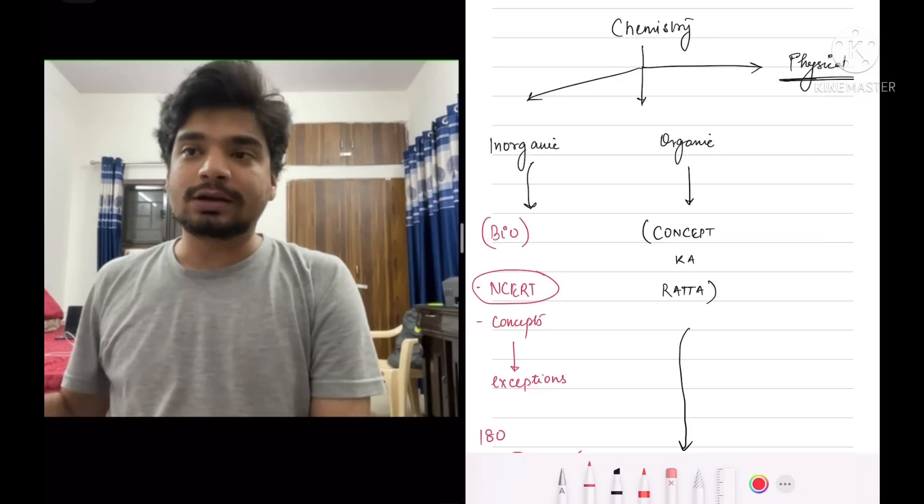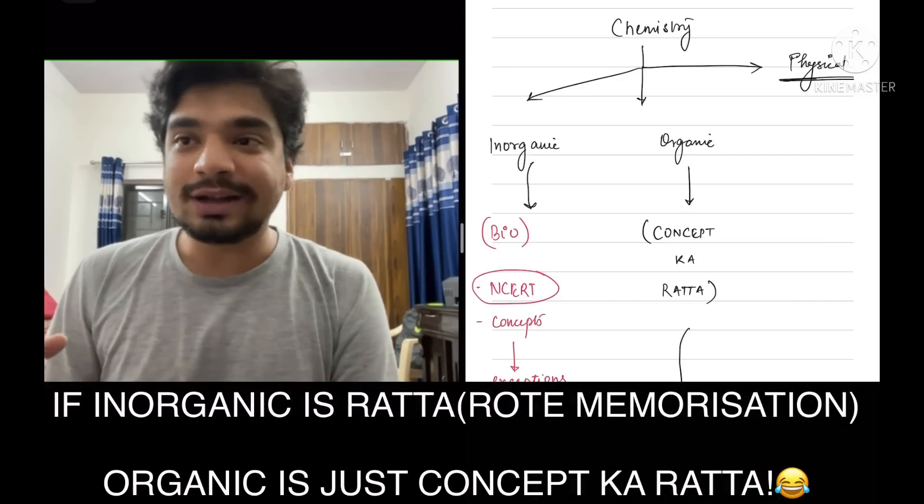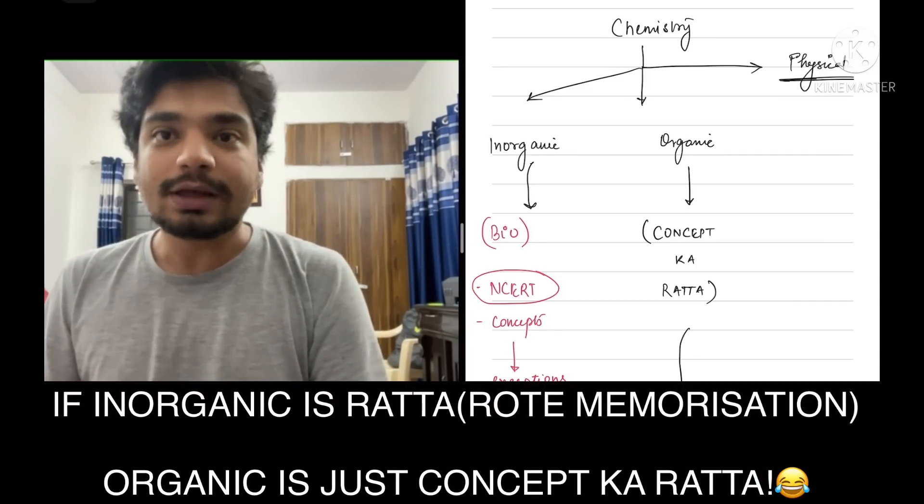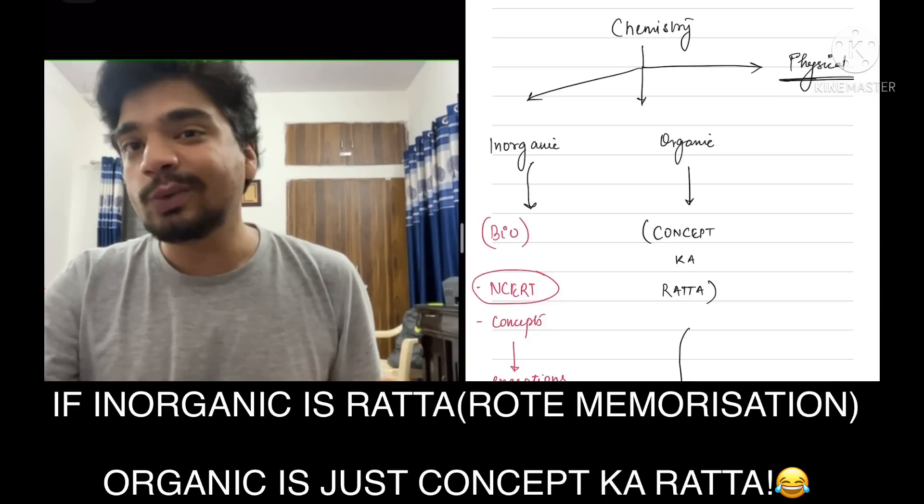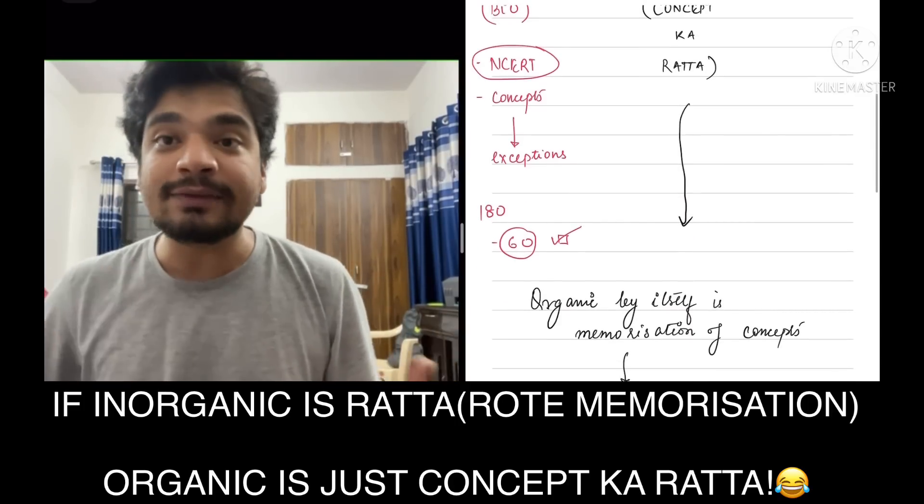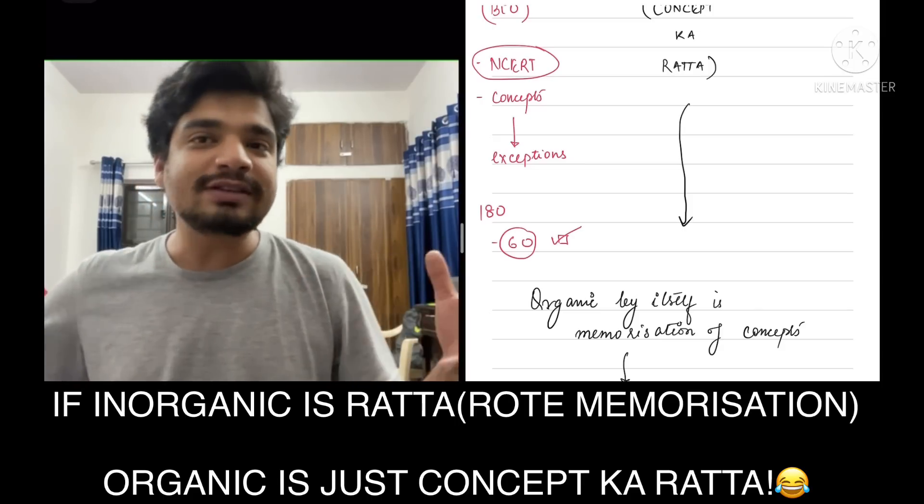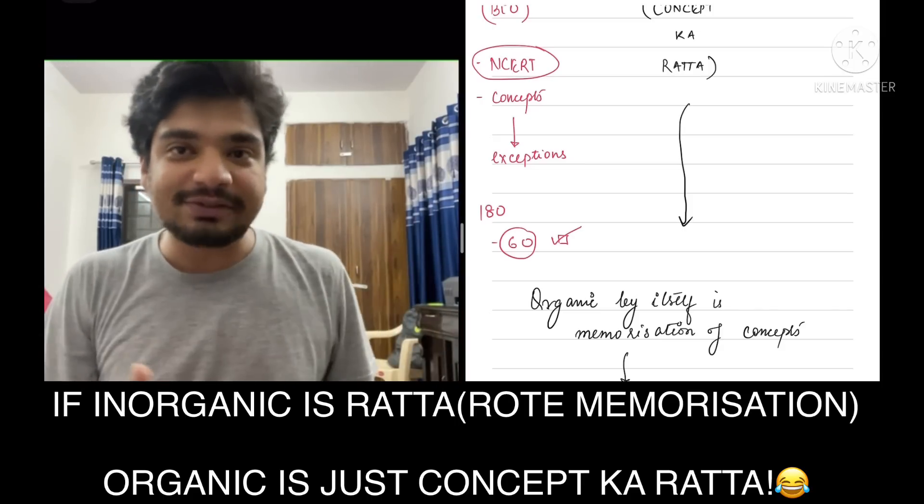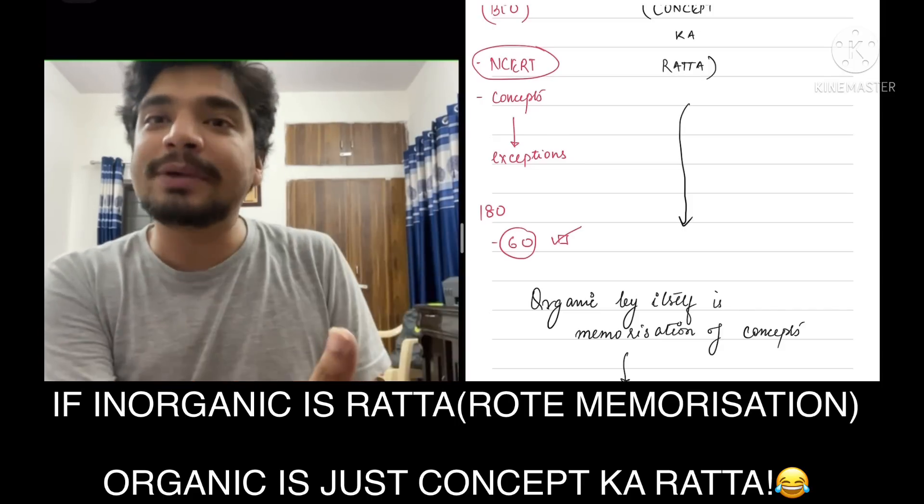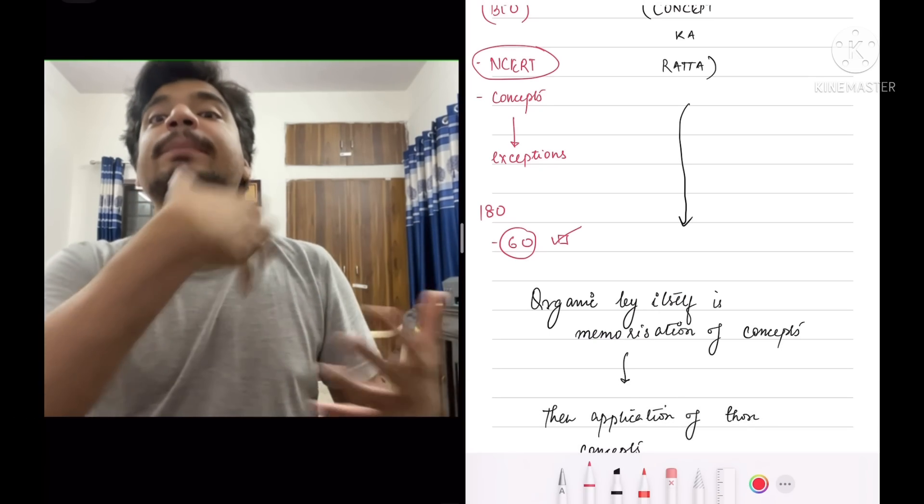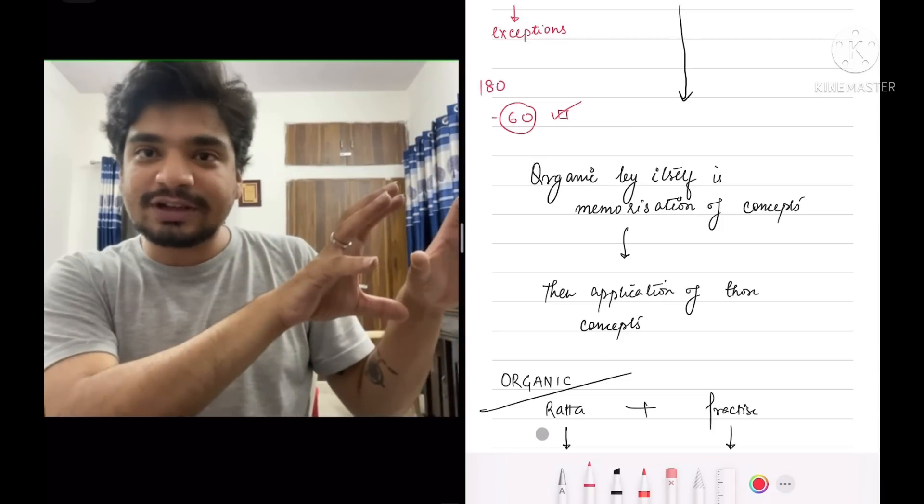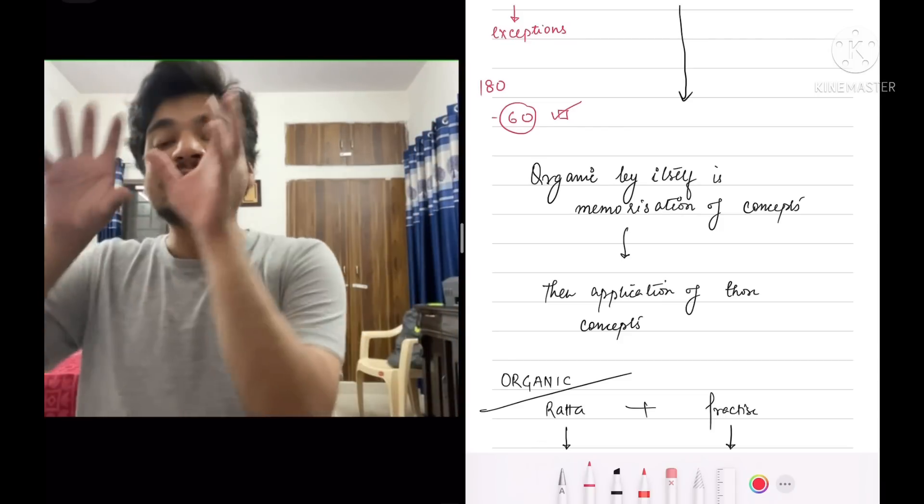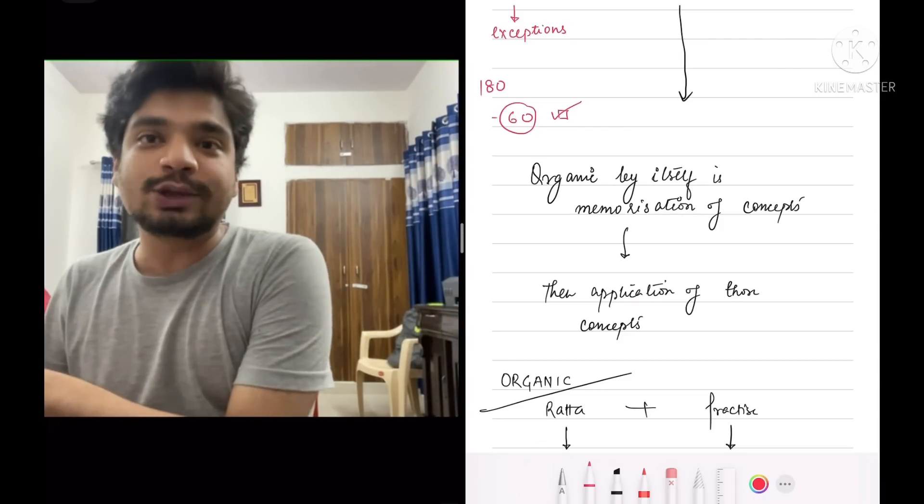Now coming to organic. Organic is what I tend to call as concept based. People say that organic has a lot of concepts. I don't agree with it completely. I believe it does have concepts, but those concepts are not like physics that you can actually derive them and get to an answer. So those concepts have to be memorized and then you have to practice those concepts. So there is rectification of the concept, memorization of the concepts, and then you have to practice and apply those concepts.